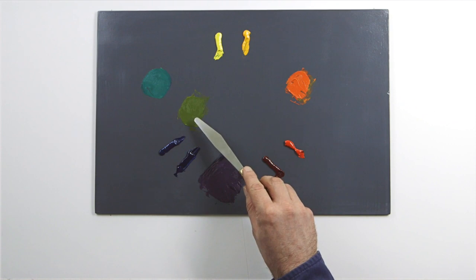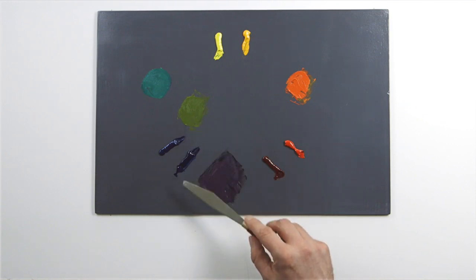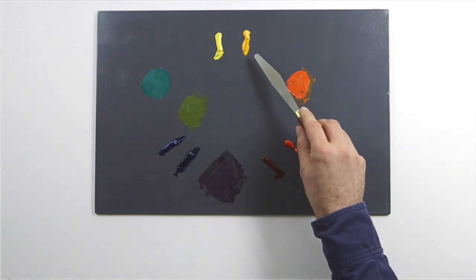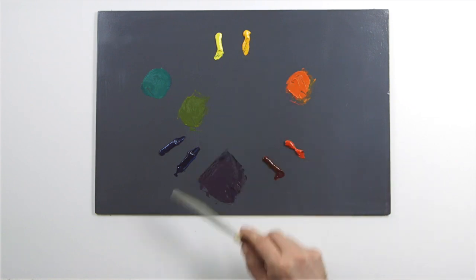This green is very earthy and demonstrates what happens when there is a partial clash of bias within the mixture. The orange bias has clashed with the blue.